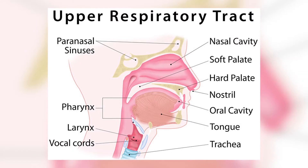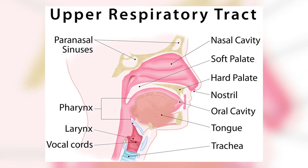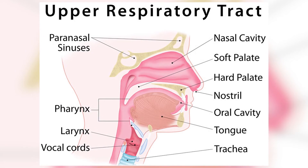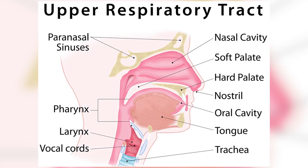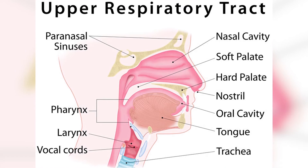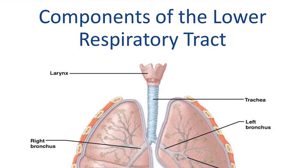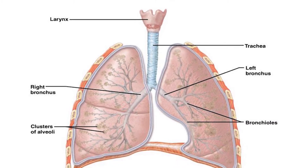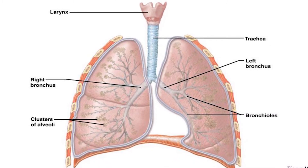Well, the major difference between upper and lower respiratory tract infection is the location of the infection. In the upper respiratory tract infection, it occurs from the organs above the larynx — that is above the voice box. Both actually always have similar symptoms, but there are specific differences in their symptoms.